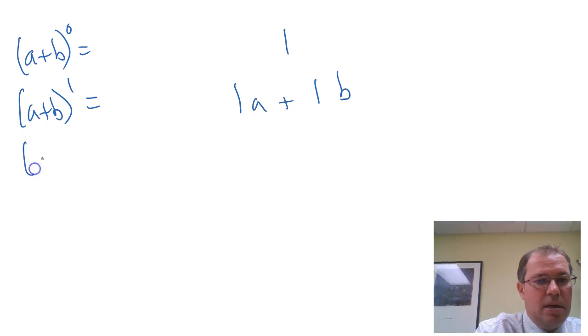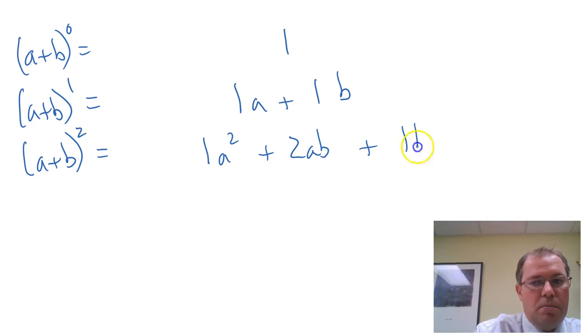And if we consider a plus b squared, just multiplying those out quickly, we get 1a squared plus 2ab plus 1b squared.